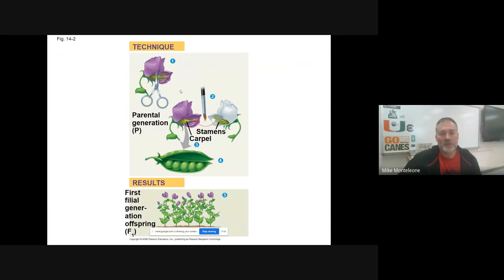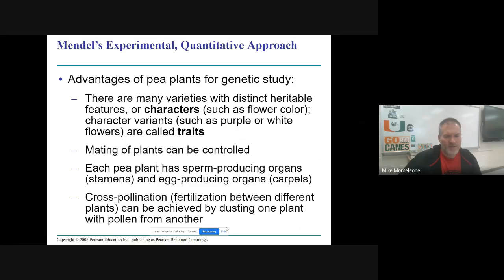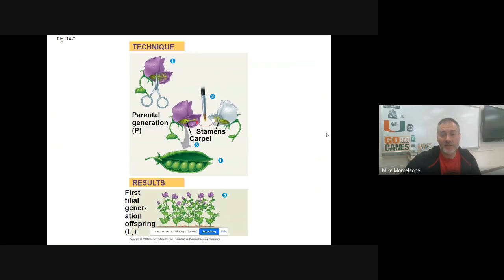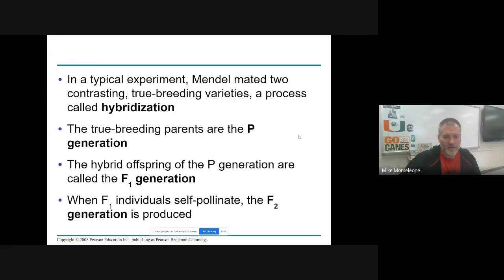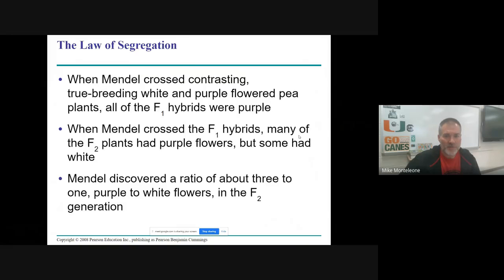He was able to control pretty accurately which plants mated with which other plants. The flowers were hermaphroditic. They had both male and female sex parts. He was able to remove the sperm-producing parts so that the plant couldn't self-pollinate. But in some cases, the plant could self-pollinate, and that was advantageous, as we will discuss. So he picked a good, whether he knew it or not, he picked a good organism to study heredity in.